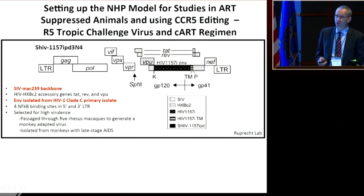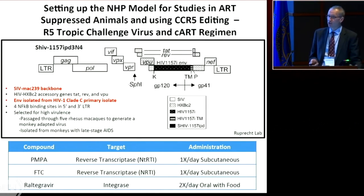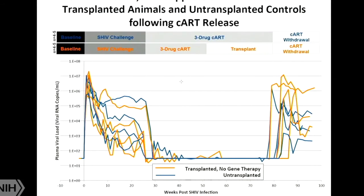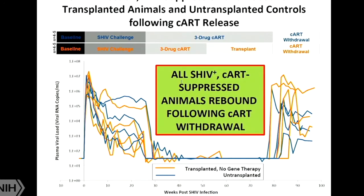For the CCR5 studies, we used an R5-tropic virus based on the SIV-MAC239 backbone with an HIV clade C envelope, developed by Ruth Ruprecht. We established viral suppression in animals using this virus, with a six-month infection period followed by six months of antiretroviral therapy, then different therapeutic interventions including transplantation or simply taking animals off ART. Critically, all these animals rebounded when we took them off ART, confirming they did not control their HIV — this became the foundation of our new DEFEAT HIV UM1.